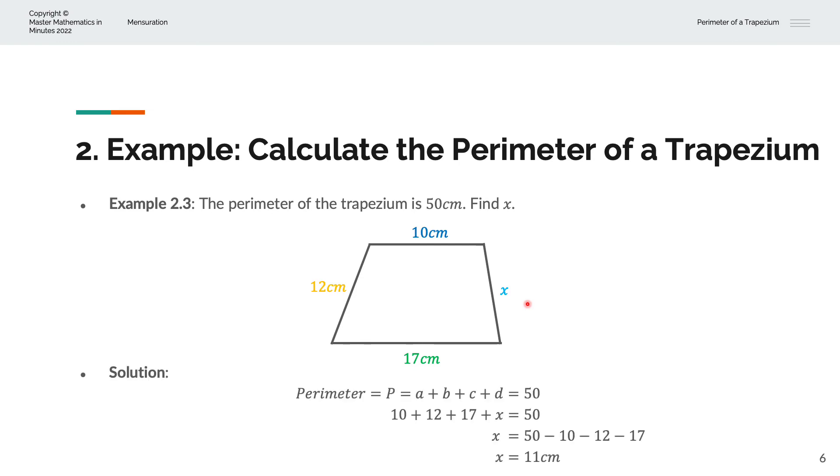And so we have perimeter, P, is equal to A plus B plus C plus D. And we'll set that to be equal to 50 from above. And we'll substitute A with 10, B with 12, C with 17, and D with X. And we'll copy X and we'll copy 50.